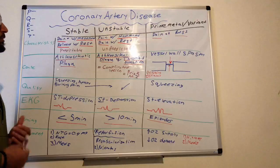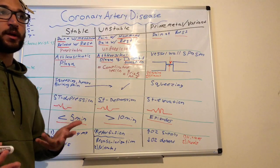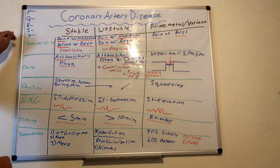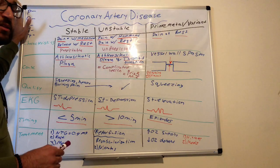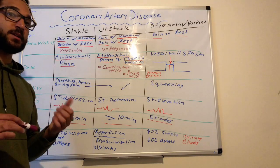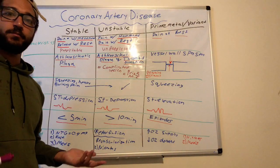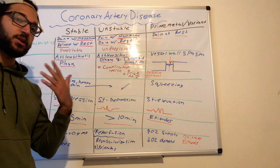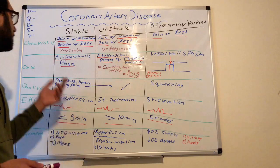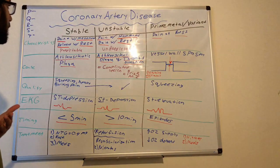For the subjective assessment, you want to ask the patient about their pain using the PQRST framework. P is provoke and palliative — what makes the pain worse, what makes it better. Q is quality — is it burning, squeezing, or heavy? R is radiate — does it radiate to the arm, back, neck, or jaw? S is severity — on a scale of one through ten. T is timing — how long does the pain last?